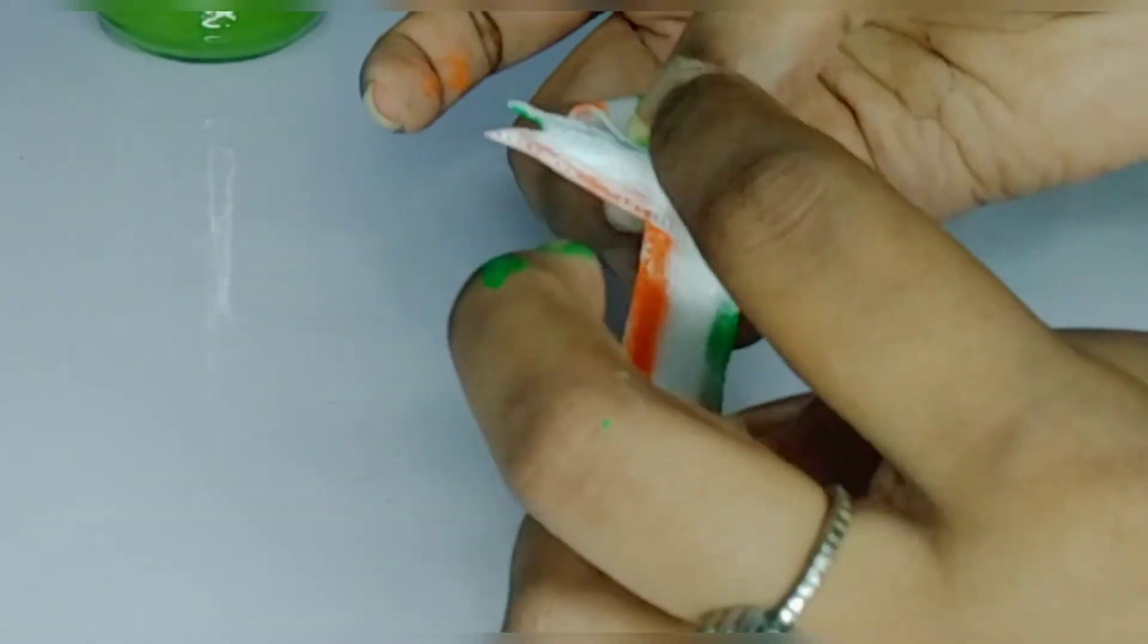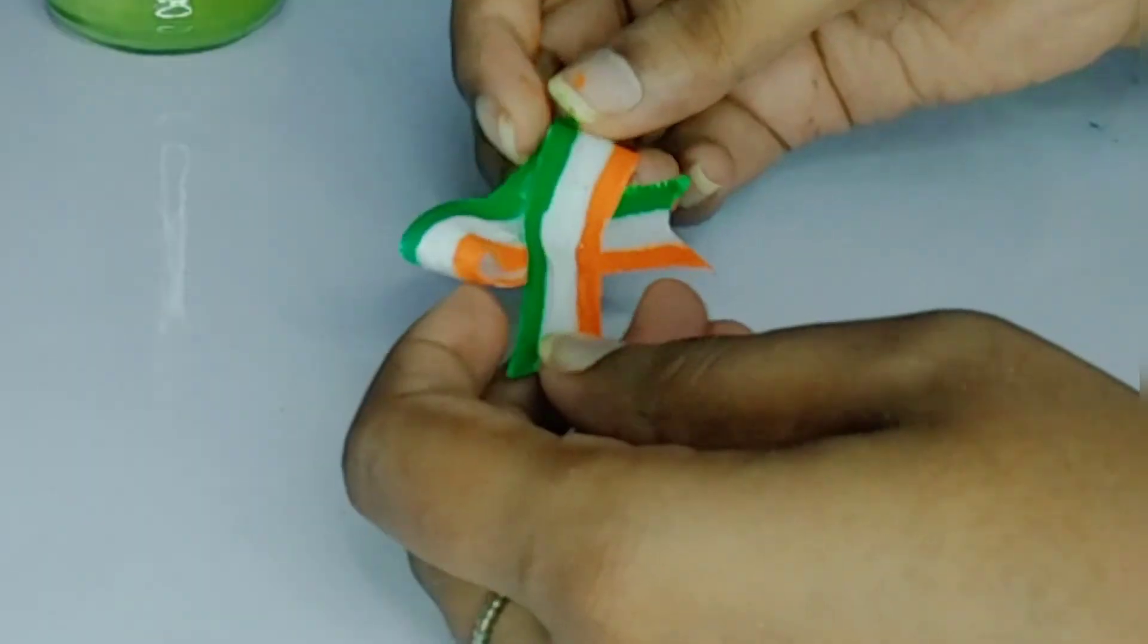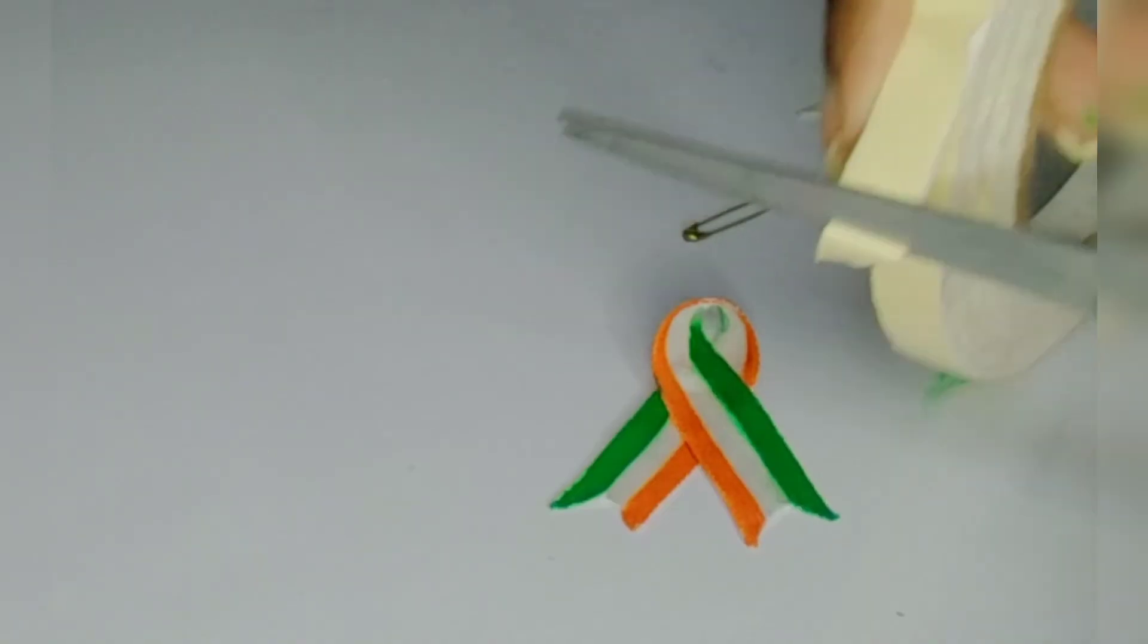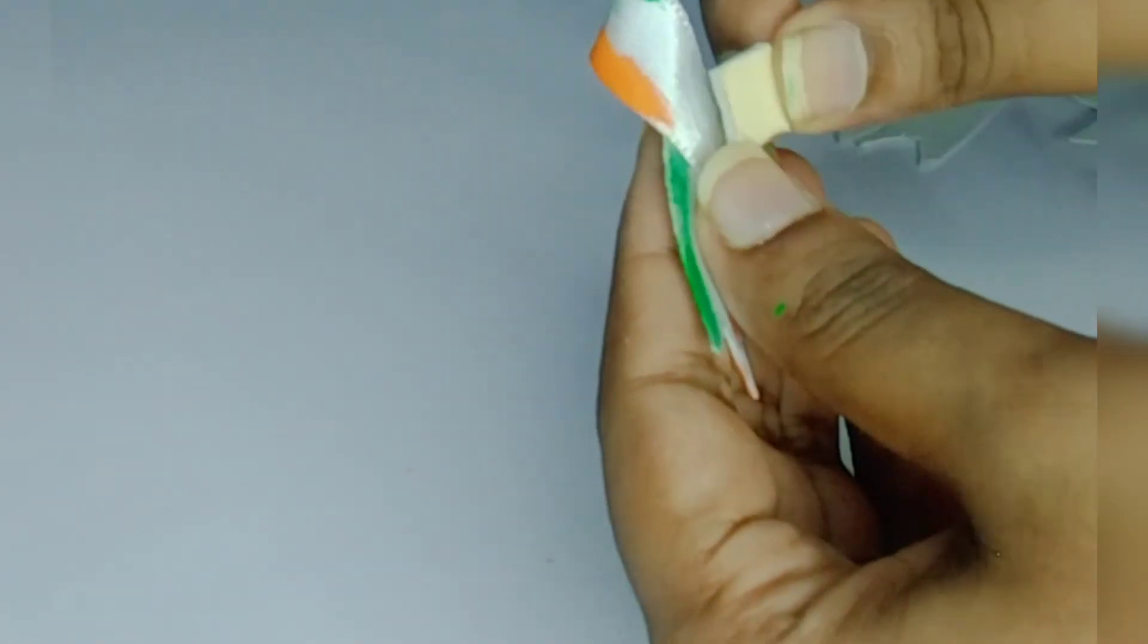So our Independence Day brooch is ready. See guys, so easy and quick. You can avoid safety pins. You can also use double tape. If you are making it for kids, so make sure you use double tape for safety concerns.